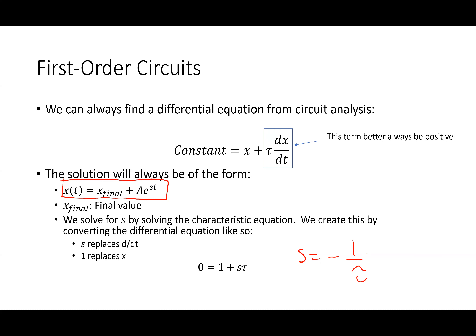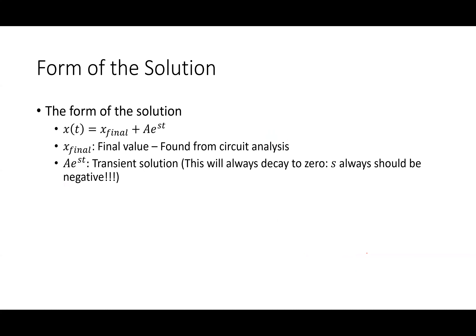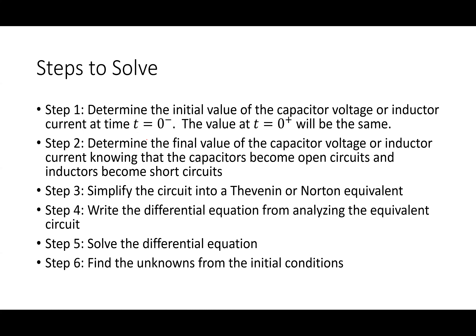The time constant τ is either RC (for an RC circuit) or L/R (for an RL circuit). Our job is really just to figure out the final value and the time constant. The unknown A is found from the initial condition — just like in differential equations, you use the initial condition to solve for that unknown value.